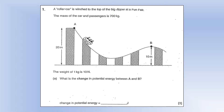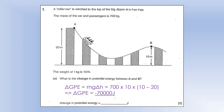What is the change in potential energy between A and B? The change in potential energy is the mass times gravitational field strength times the change in height. It starts at 20, ends up at 10, so we do 10 minus 20 because it's final minus initial. So it loses 70,000 joules of gravitational potential energy.